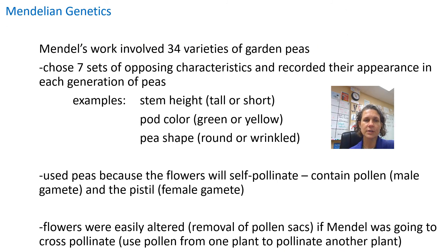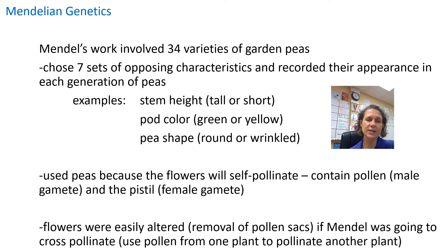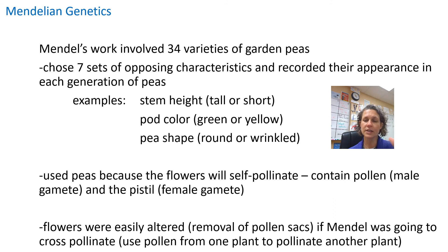Here's a little bit about Gregor's work. He worked with 34 varieties of garden peas and chose seven different opposing sets of characteristics, then kept records of their appearance as they went through each generation. He looked at the height of the plant, the color of the pods, the shape of the peas, and all these different things.